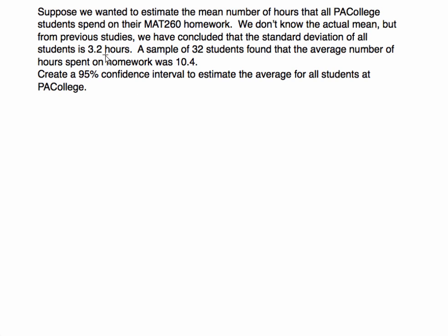So first, let's write down what we know. In this example, I am given that the population standard deviation, sigma, is 3.2. That's great. If I'm given this information, that means I will be using z-scores. I have a sample of 32 students, so n is equal to 32. I also know that the average number of hours spent is 10.4, so x-bar is 10.4.